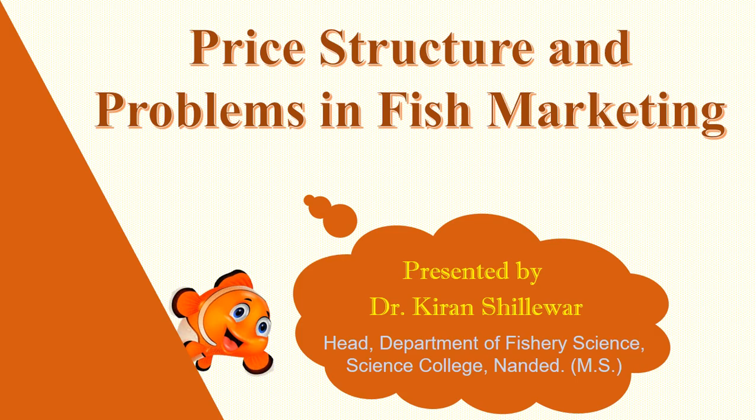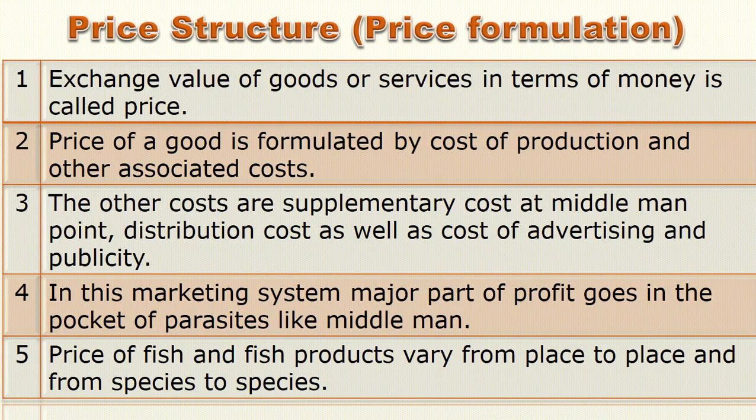The topic is price structure and problems in fish market. The exchange value of goods or services in terms of money is called the price. Price of goods is formulated by cost of production and other associated costs. The other costs are supplementary cost, middle-point distribution cost, as well as cost of advertising and publicity.